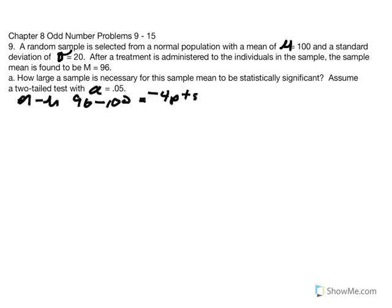Given that we're told to conduct a two-tailed test with alpha equal to 0.05, our critical z is equal to positive/negative 1.96. What we're trying to determine is what n needs to equal in order to push our sample mean of 96 out into the critical region — in other words, a z value greater than 1.96.